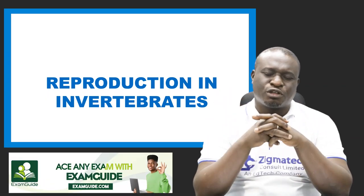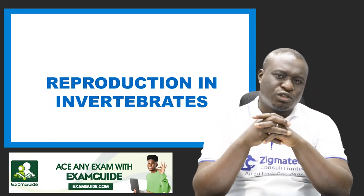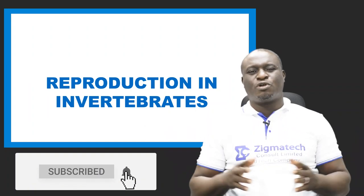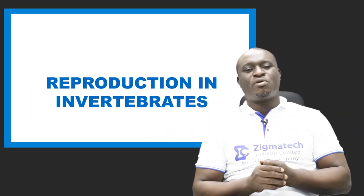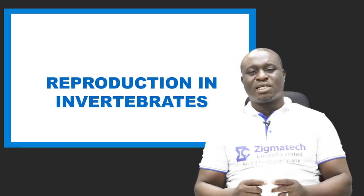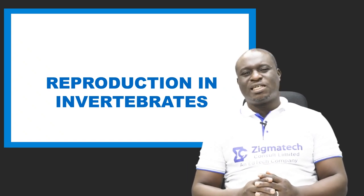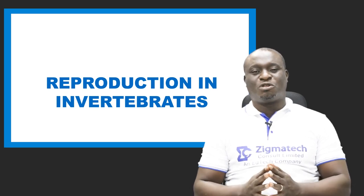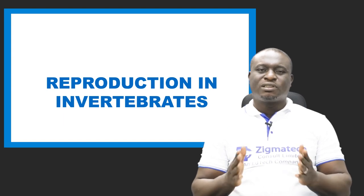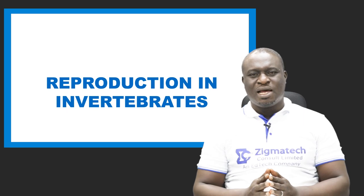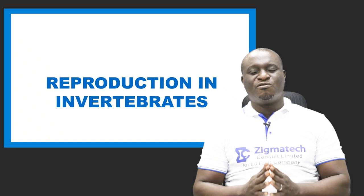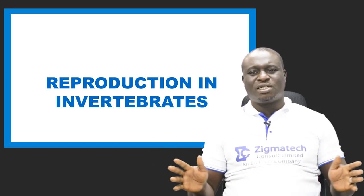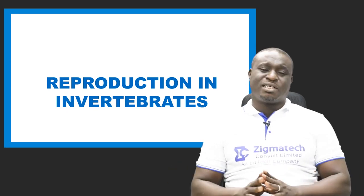We also discussed types of reproduction. We have basically two types: sexual and asexual reproduction. Under sexual reproduction, it involves two parent organisms and it involves the production and union of their gametes. Examples of organisms that carry out sexual reproduction include higher plants and higher animals. Asexual reproduction involves only a single parent and there is a total absence of gametes.